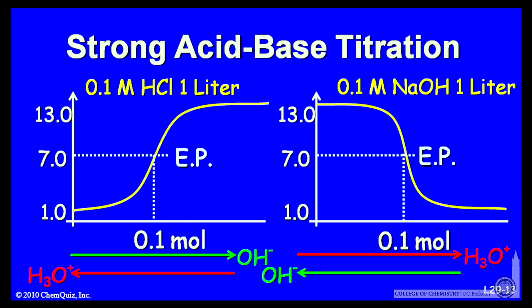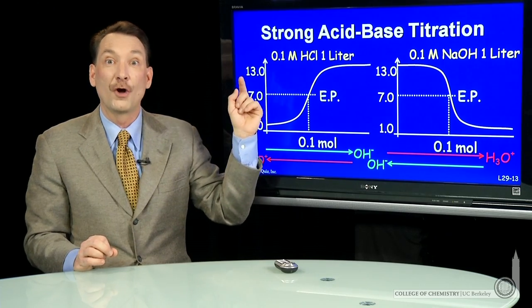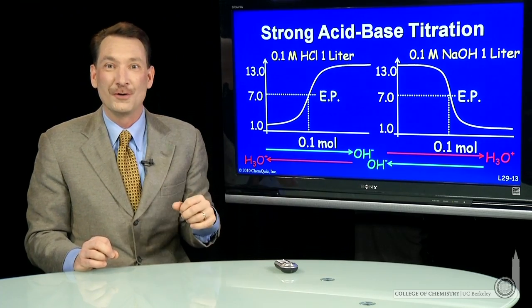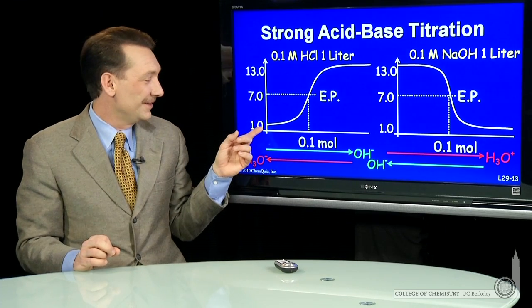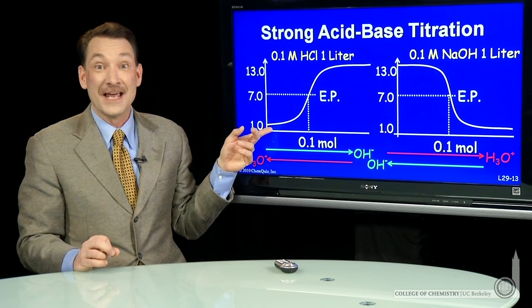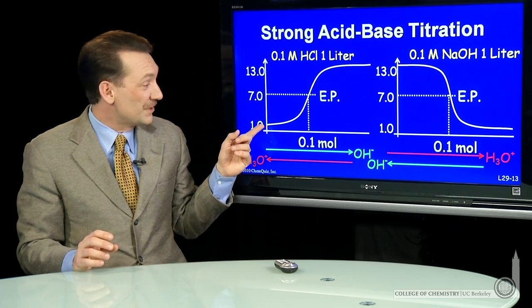For instance, if you start with 0.1 molar HCl, that would have a pH of 1, because the H₃O⁺ concentration in 0.1 molar HCl is 10 to the minus 1. This totally dissociates, forming 0.1 moles — or 10 to the minus 1 moles — of H₃O⁺ per liter. The pH is minus log of 10 to the minus 1, which equals 1. So you start with pH 1.